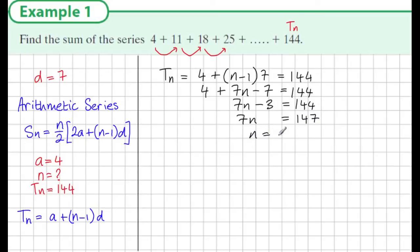Now to find the n, we divide both sides by 7, giving us n equals 21. So now we know that the 21st term is equal to 144.